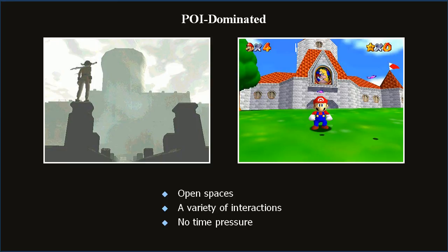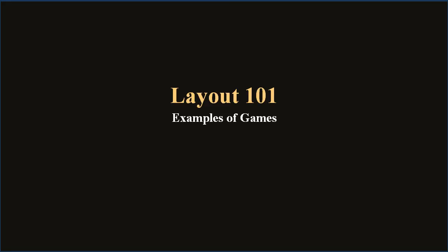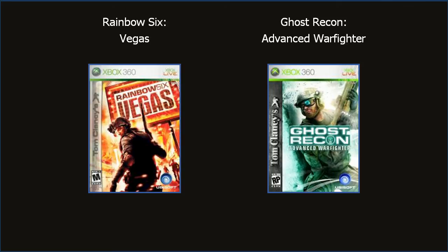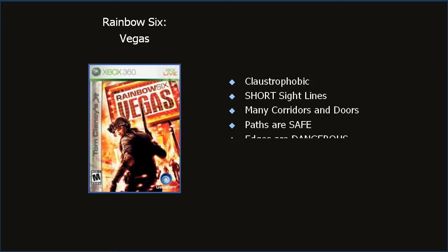A funny note: both these screenshots have a castle in the backdrop, serving as the focal point for the larger experience. Let's apply some of these ideas to some games — two tactical shooters in the same genre but with completely opposite gameplay: Rainbow Six Vegas and Ghost Recon, both by Ubisoft. Rainbow Six is claustrophobic: tight interiors with constant edges acting as cover, short sightlines creating small intense kill zones, many corridors and doors, and levels in landmark buildings. The paths are safe, serving as transitions, while edges are dangerous — breaching to the next room reveals new conflict.